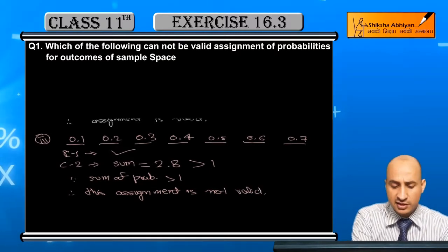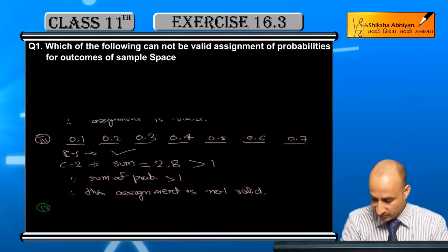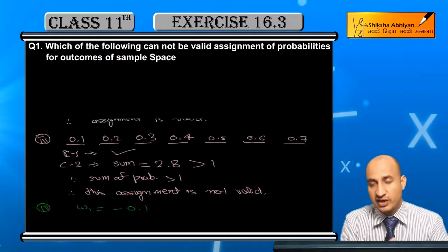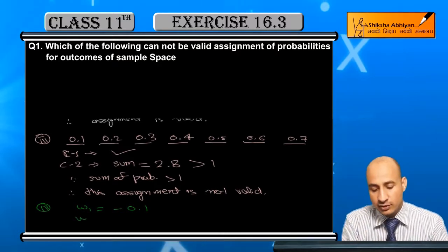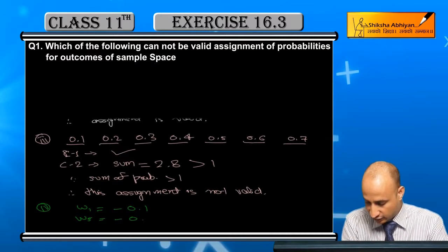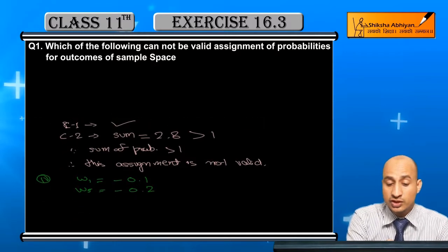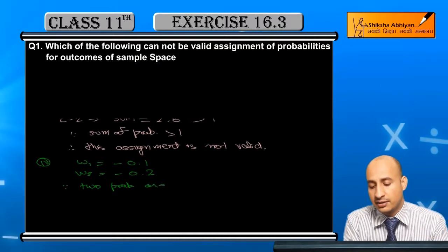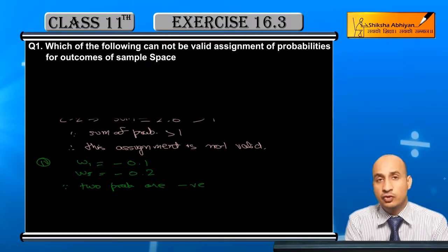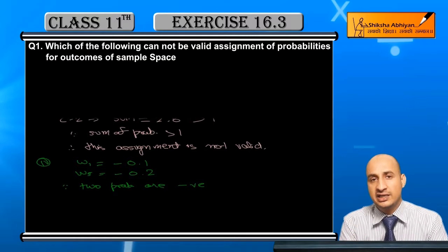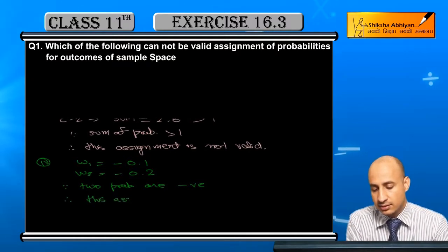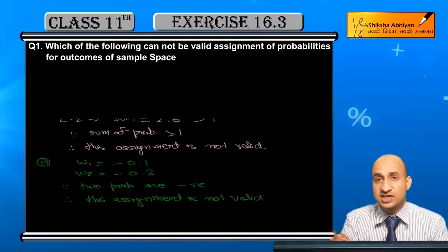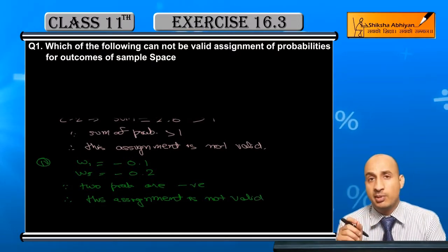For part (d), ω1 has value −0.1, and ω5 also has a negative value. Since two probabilities are negative, condition 1 is not fulfilled. Both conditions must be satisfied for an assignment to be valid, therefore this assignment is not valid.